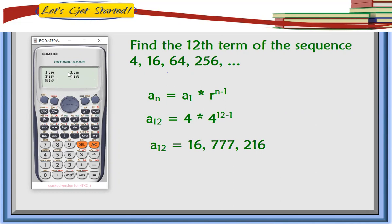Since we are solving for the value of the 12th term, we're going to choose number 5. Before the y hat, we're going to input the term we're looking for, which is the 12th term. We got an answer of 16,777,216.